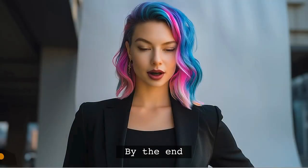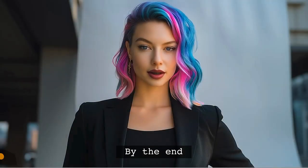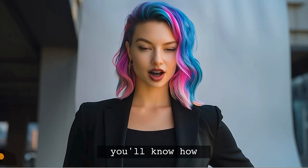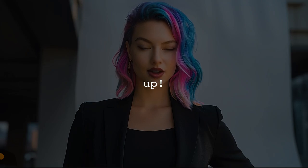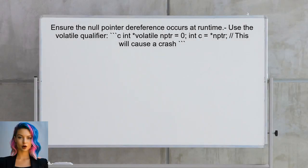By the end of this video, you'll know exactly how to ensure your test cases crash as intended. To ensure that the null pointer dereference actually occurs at runtime, use the volatile qualifier. This prevents the compiler from optimizing away the dereference, making it more likely to crash as intended.